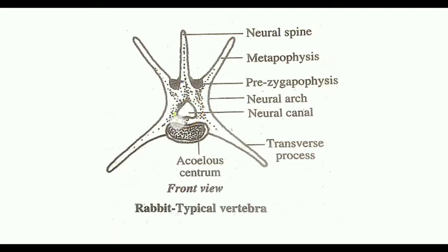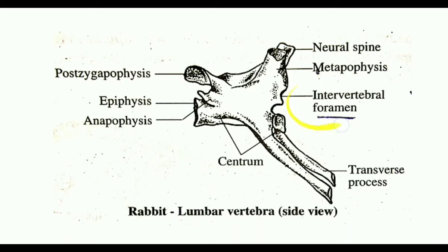Each end of the centrum bears epiphyses — one in front and one behind — and these are called intervertebral notches. When adjacent vertebrae articulate, these notches form intervertebral foramina for the passage of spinal nerves.